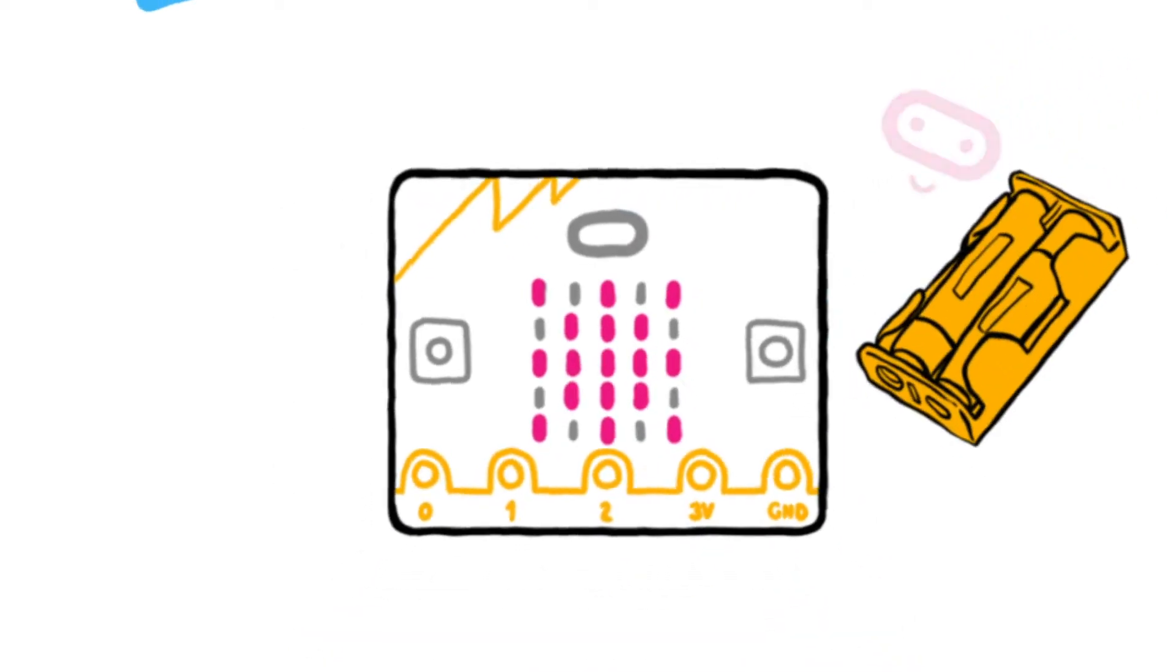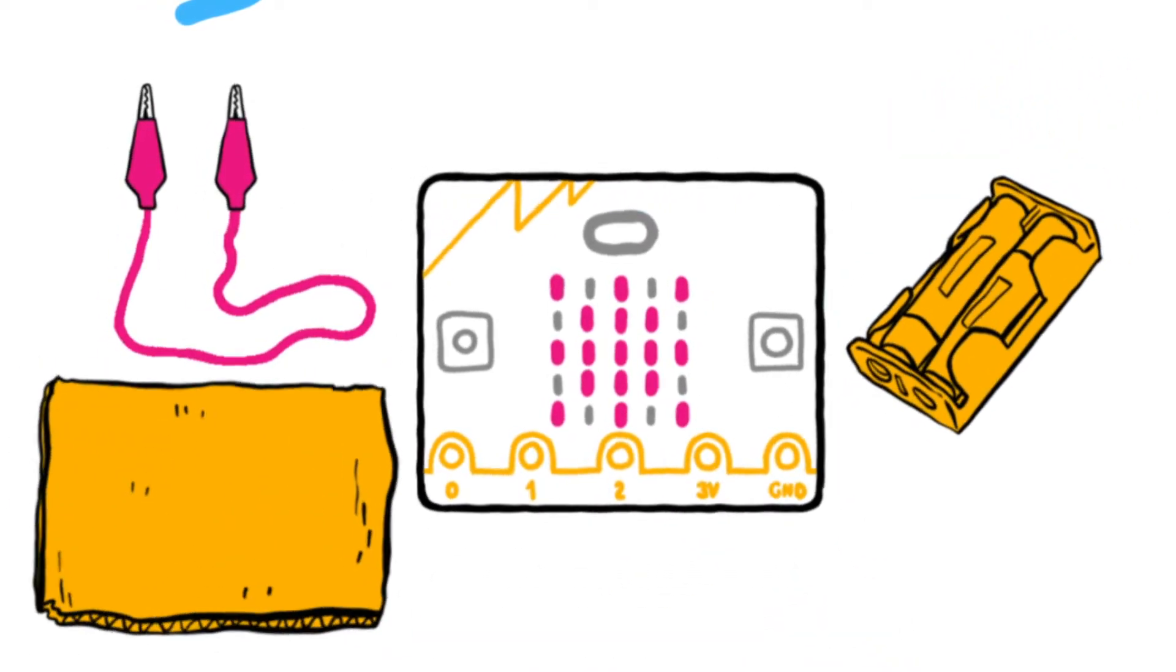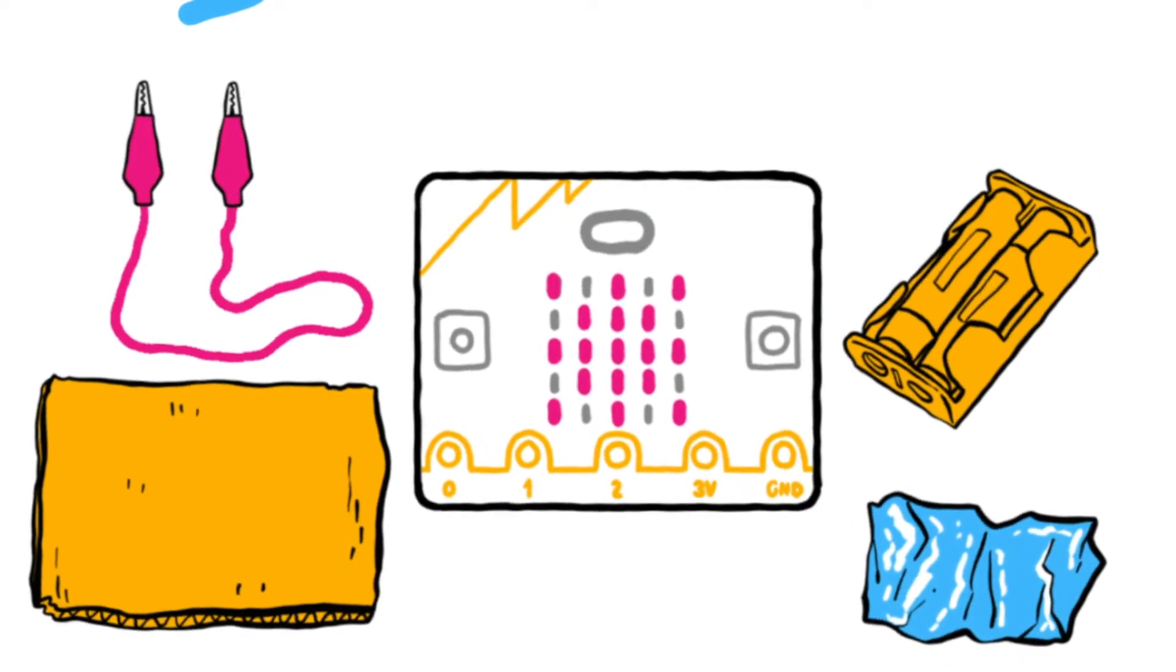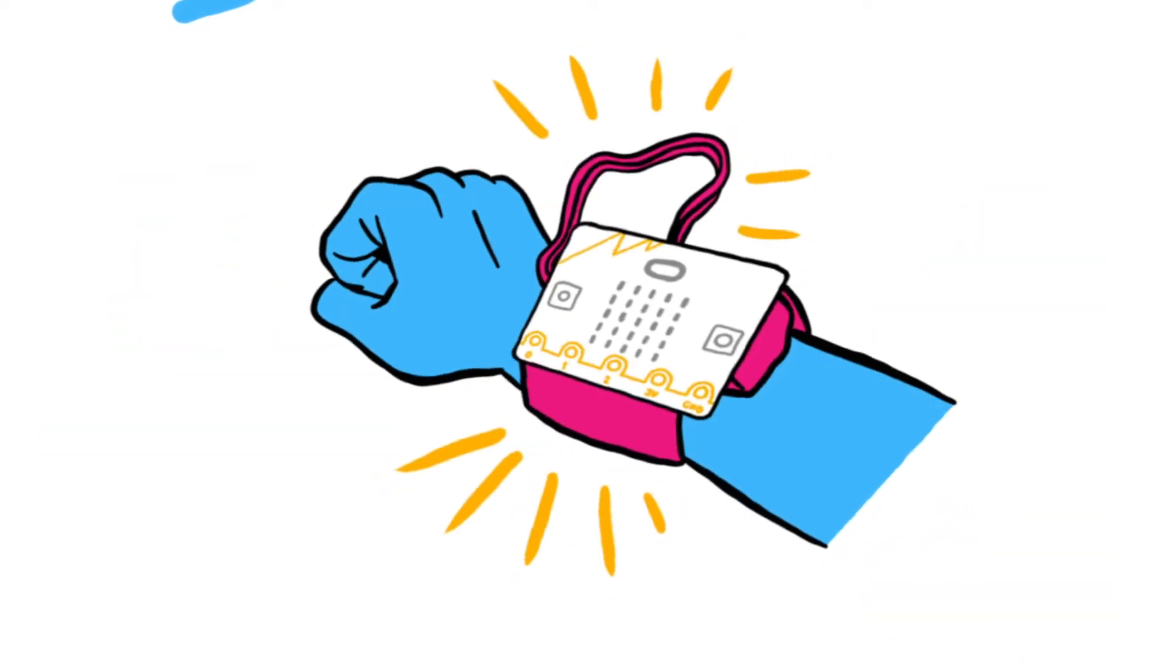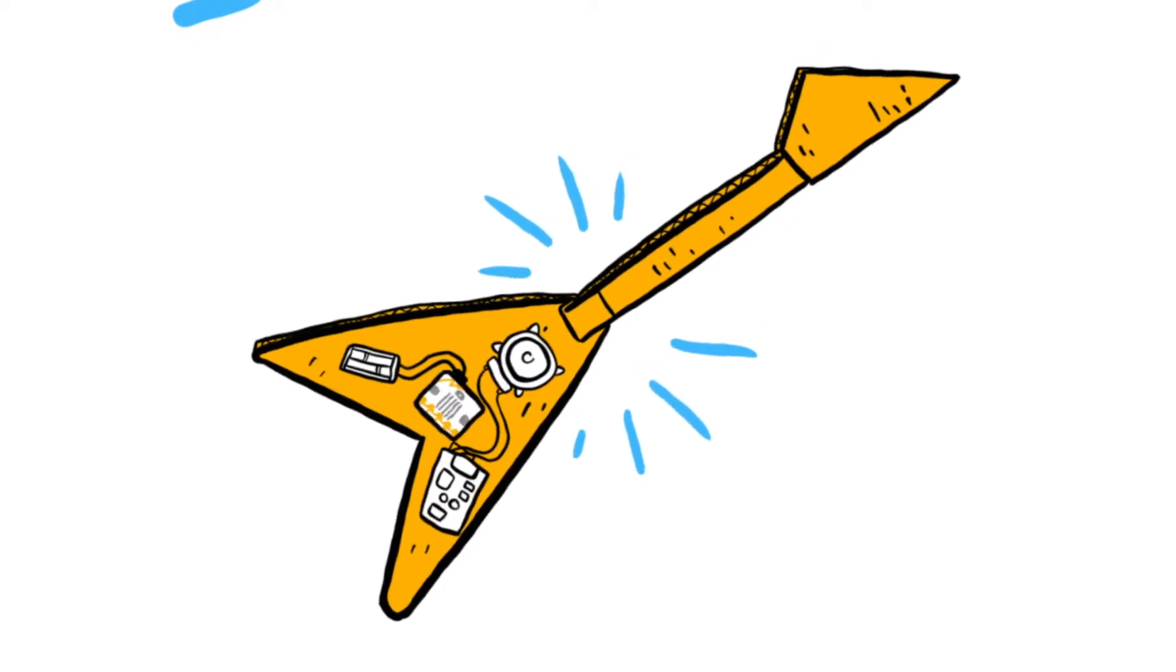Using simple things like the battery pack, crocodile clips and scrap pieces of cardboard and aluminum foil, you can extend the range of things your micro:bit can do and have lots of fun.